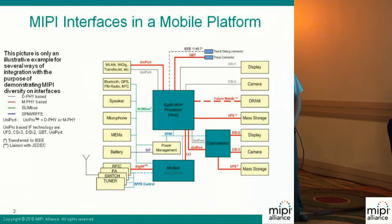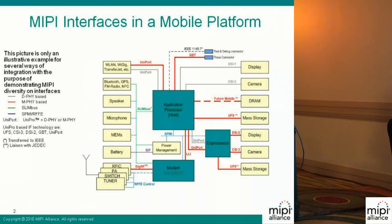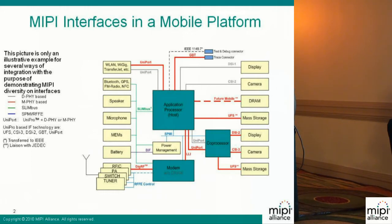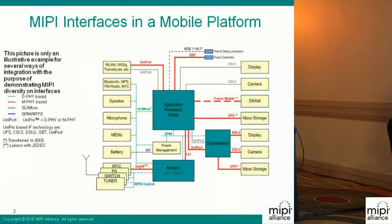This diagram shows an example of usage of the UniPro interface in a mobile system. The first application that is going to use UniPro is the interface to mass storage devices. This is also the UFS interface which is being defined by JEDEC. Other interfaces using UniPro are DSI-2, which is a next generation display interface, and CSI-3, the next generation camera interface, also using UniPro. You can also see a UniPort link between an application processor and a coprocessor, for example extending the capability of the application processor with additional features like graphical features.